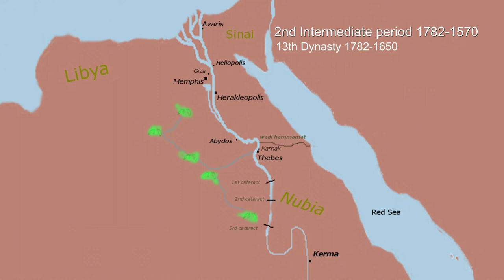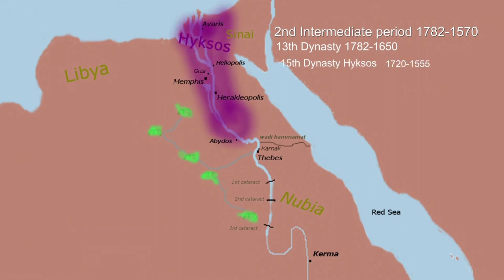The Hyksos are known as the 15th dynasty. They started in Avaris, which was their capital, and took over Memphis and Heracleopolis. They never actually made any attempt on the 13th dynasty, but very much shut down their ability to trade outside other than with Nubia.